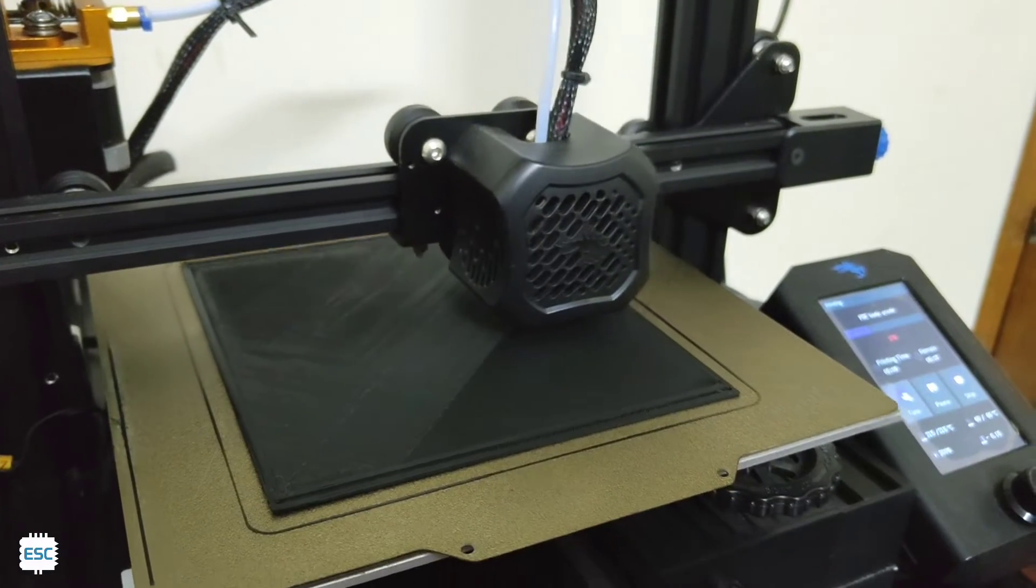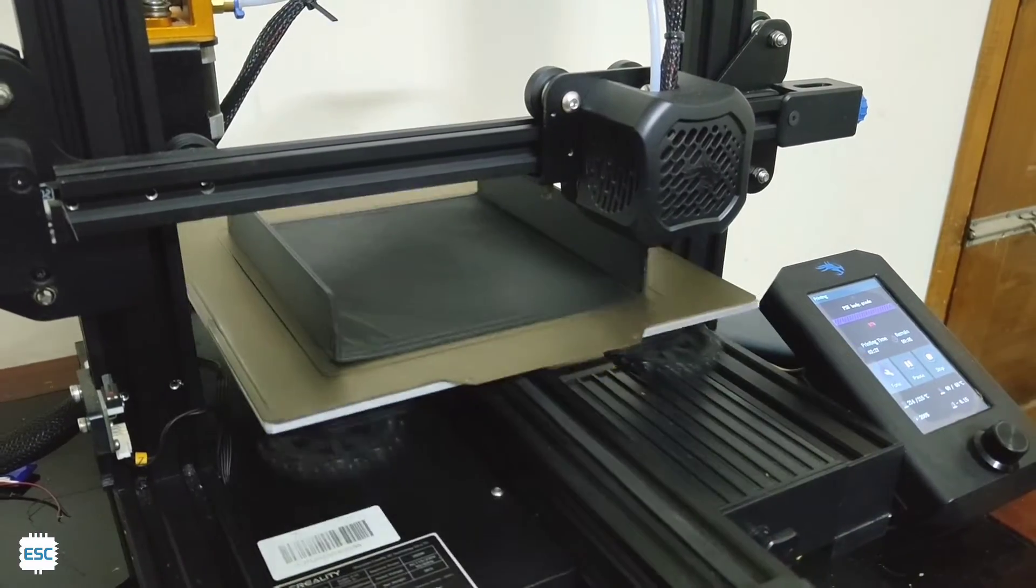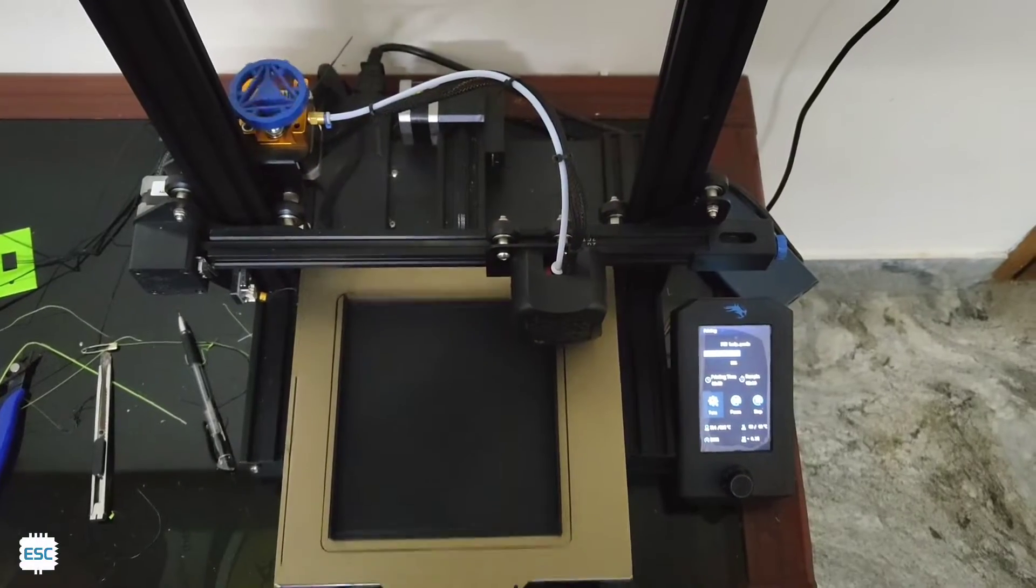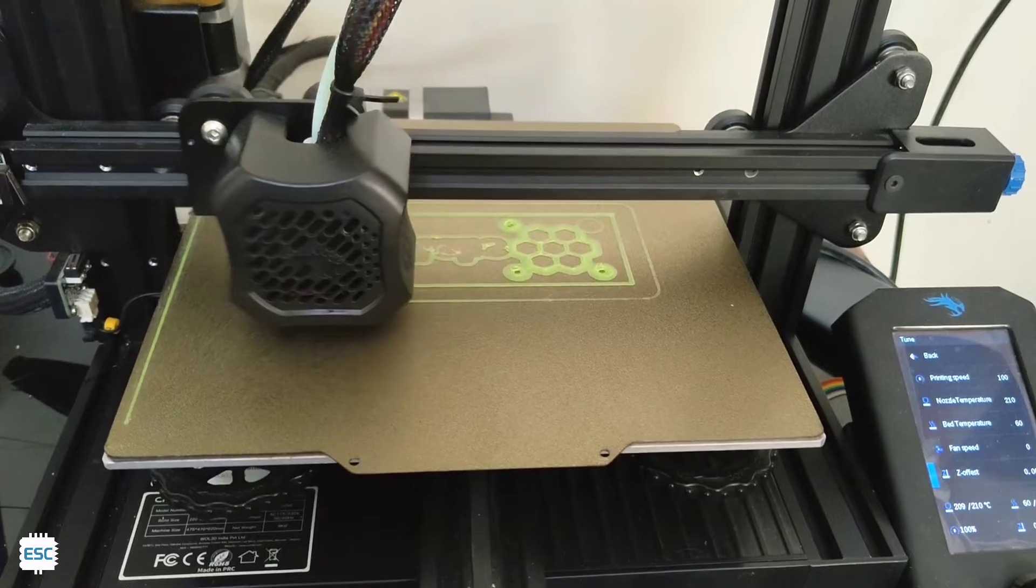Then I have printed the enclosure using my 3D printer. I used black color for top and bottom and I printed front and back with the green color.